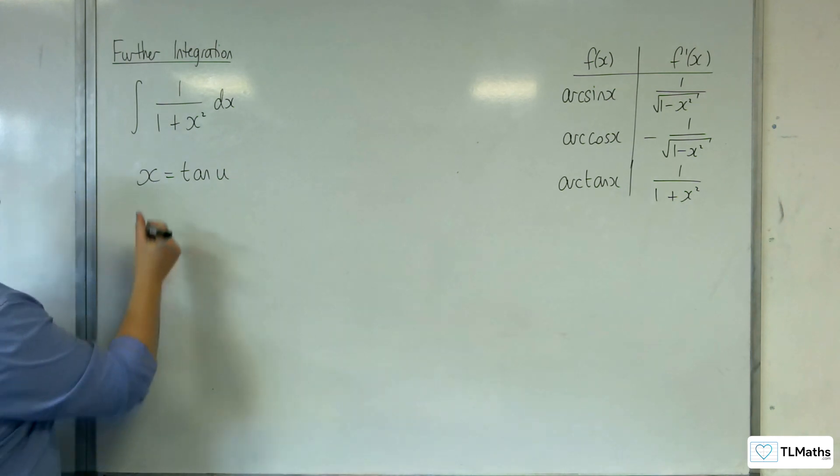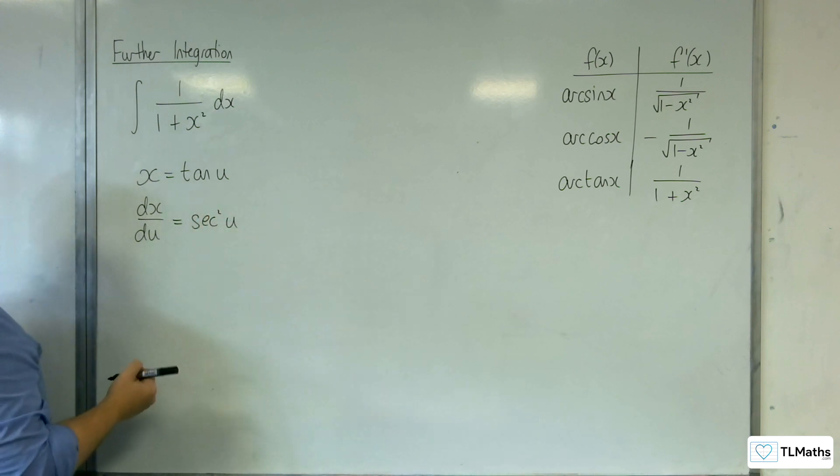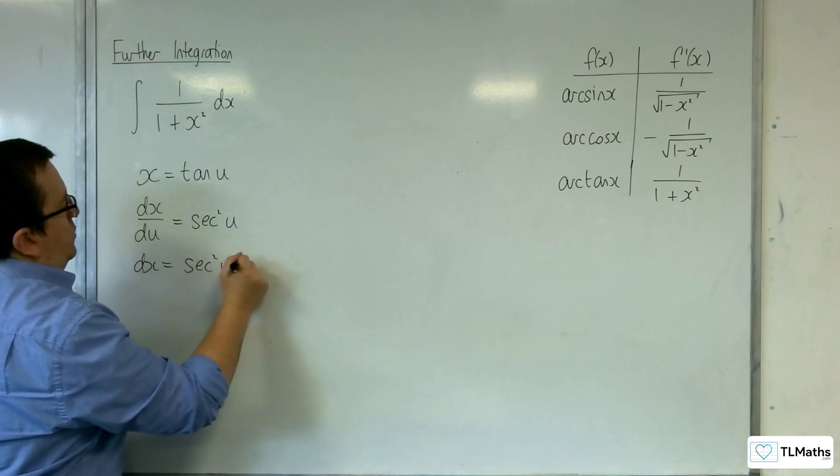So, we first of all differentiate the substitution dx by du is equal to sec squared of u. And so, rearranging to get dx, we get sec squared u du.